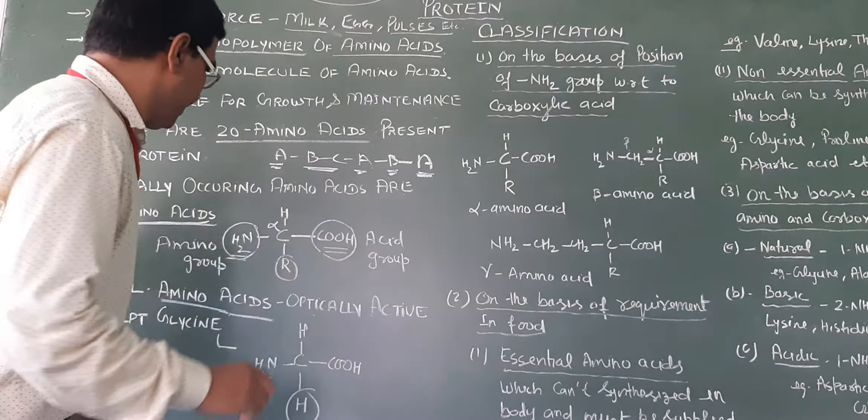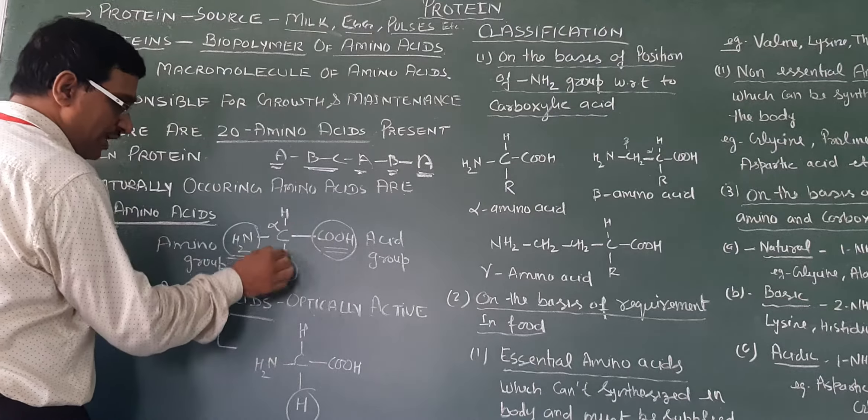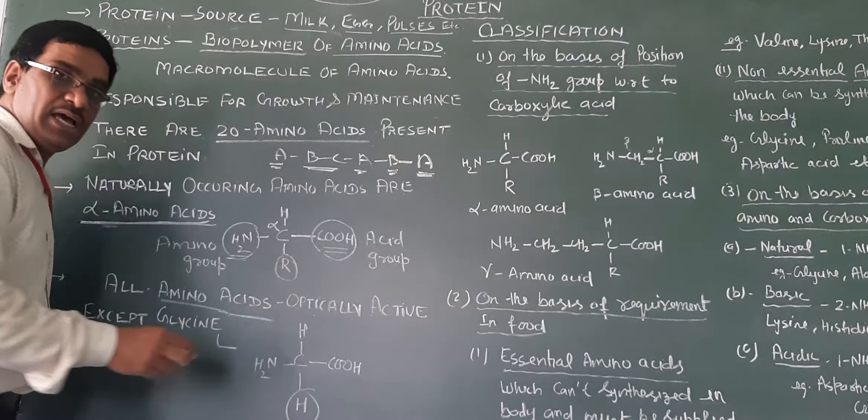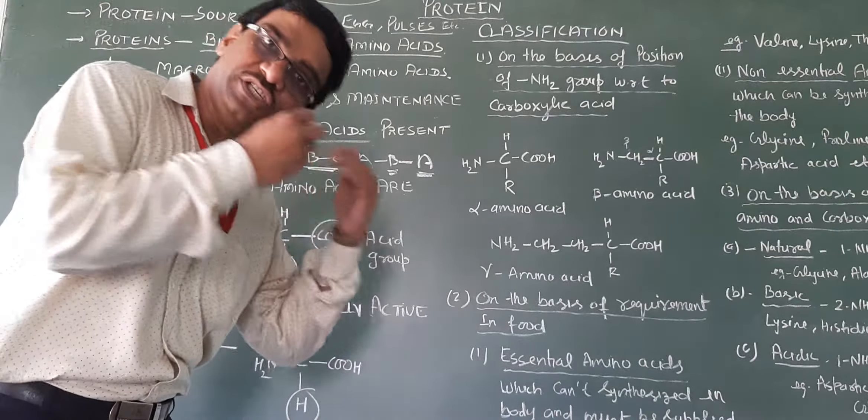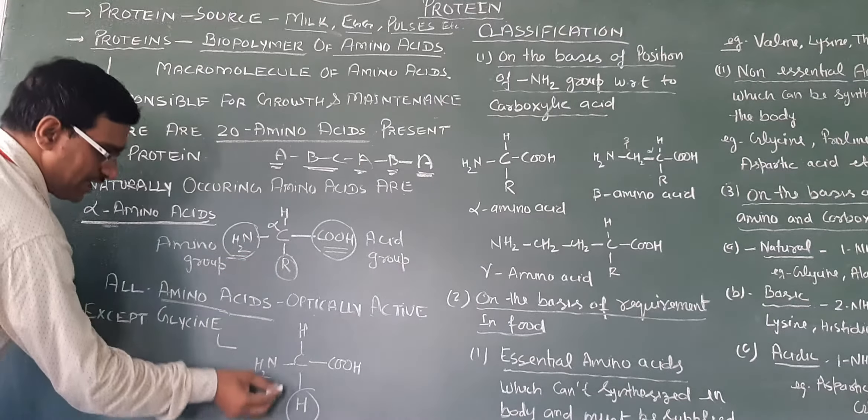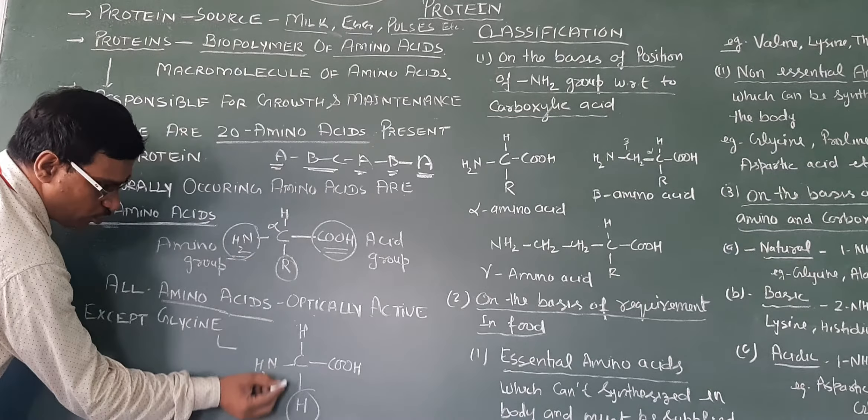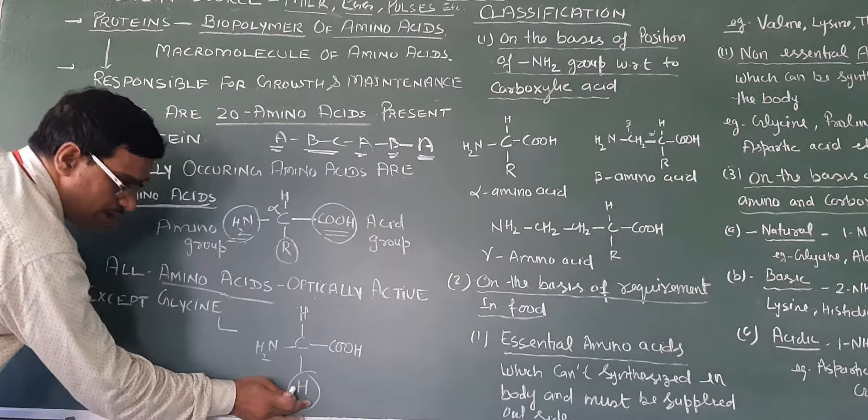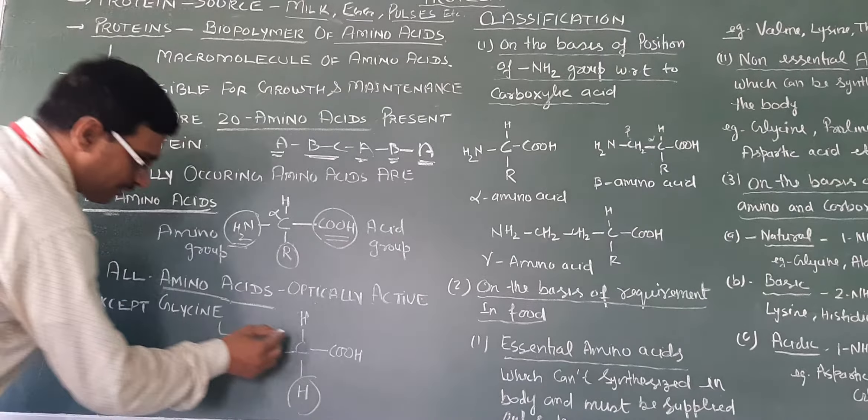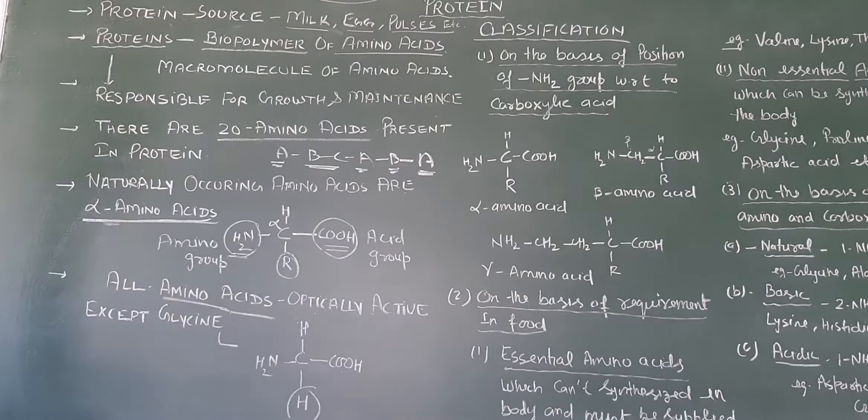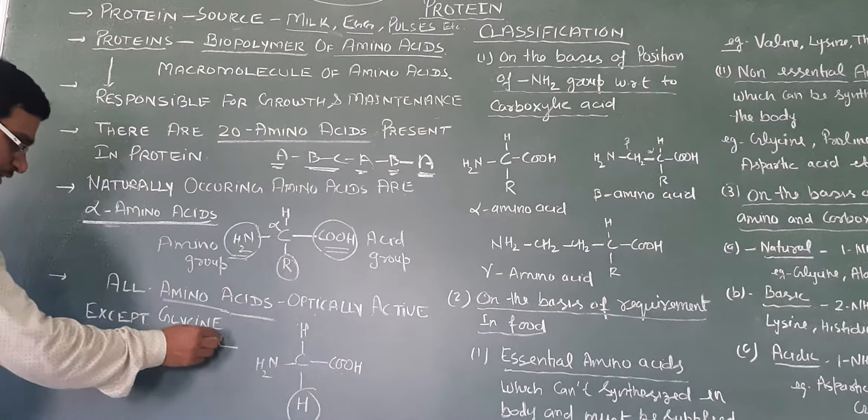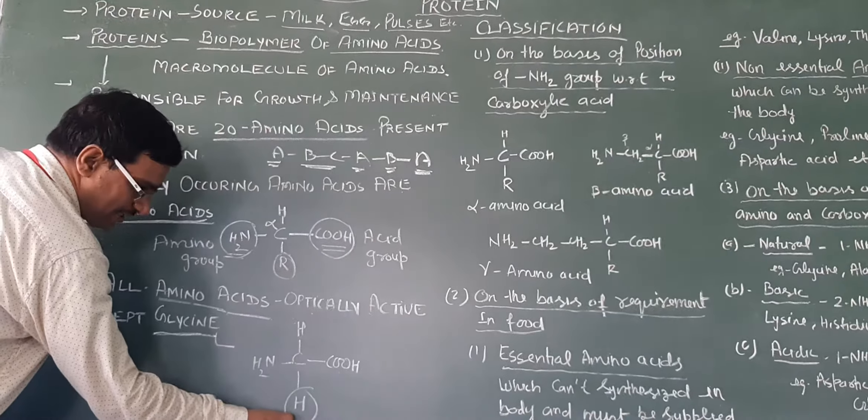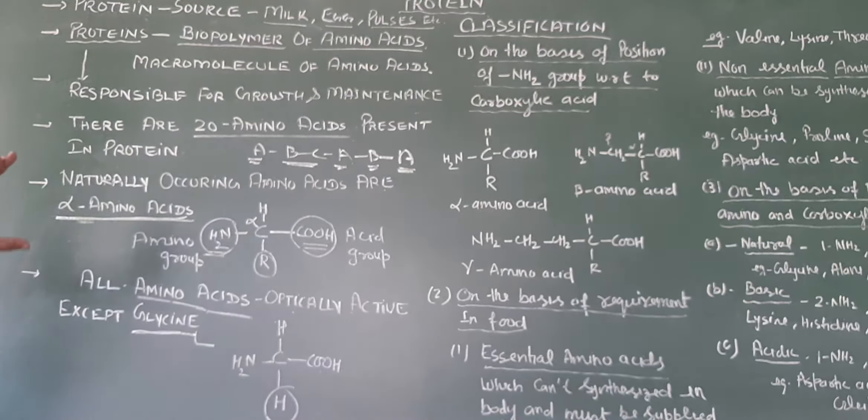Alpha amino acids are optically active if four different groups are attached to the alpha carbon. This makes it an asymmetric carbon. All amino acids are optically active except glycine. Because in glycine, R is hydrogen, making it symmetric. Therefore, glycine is optically inactive.